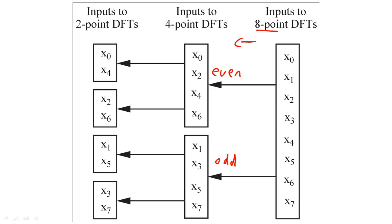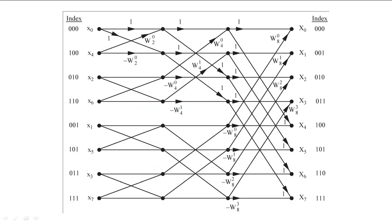We would then break each of the four-sample DFTs into two two-sample DFTs with every other sample being used by a different butterfly. The eight-sample DFT would then be calculated by using four two-sample butterflies, two four-sample butterflies, and one eight-sample butterfly.